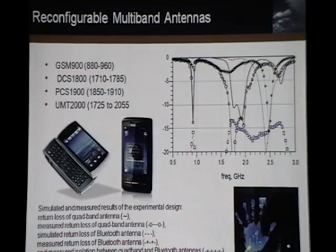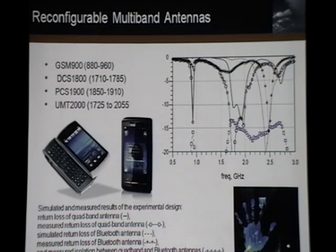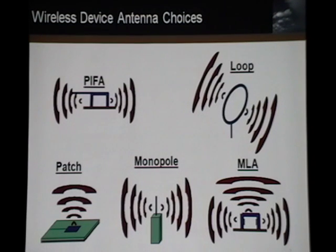Reconfigurable multi-band antennas are always the future and also a challenge. We have to support multiple bands — 3G, Wi-Fi, Bluetooth, GPS, and WiMAX. The reconfigurable multi-band antenna is a significant issue. For Wi-Fi devices, there are normally a couple of switches involved.